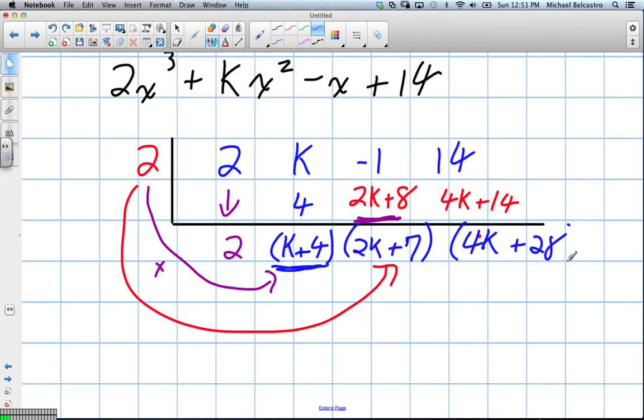So we have some unknown values here when going through this. But what we do know is they said this is a proper factor. So in other words, there is no remainder, 0. So we've gone through it this way.